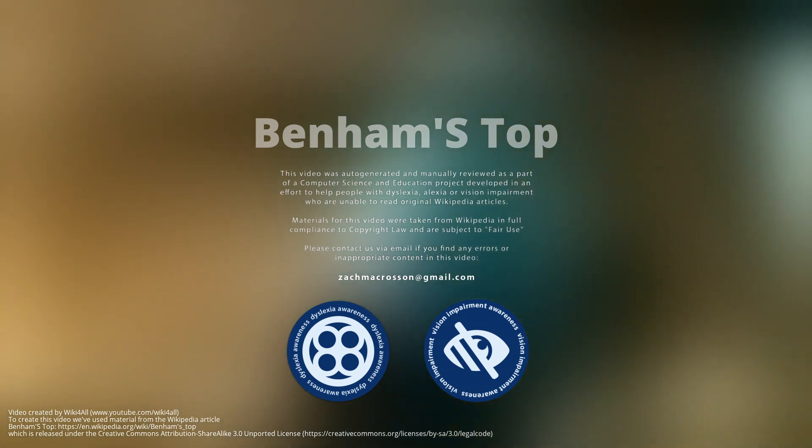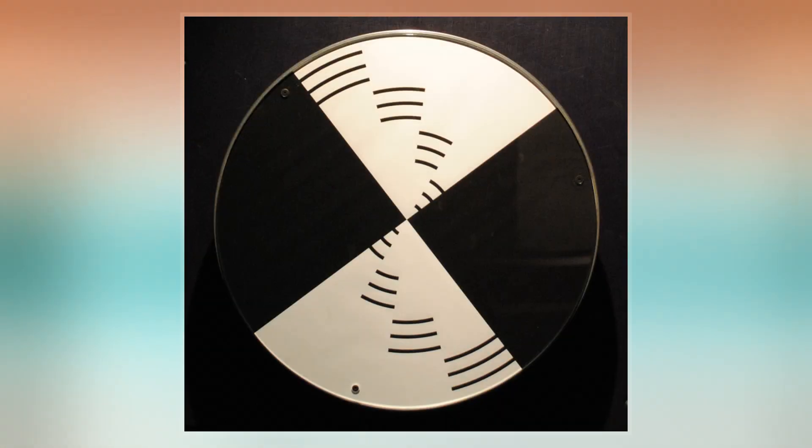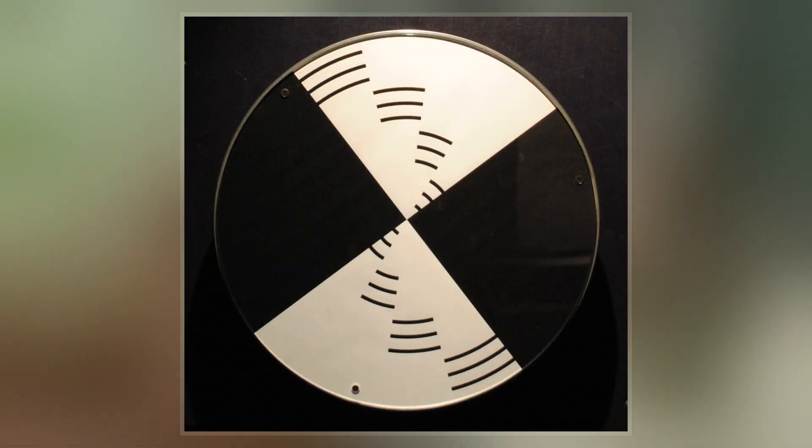The Fechner color effect is an illusion of color seen when looking at certain rapidly changing or moving black and white patterns. They are also called pattern-induced flicker colors.